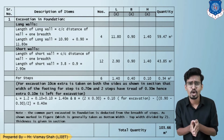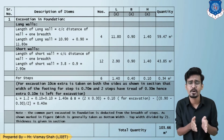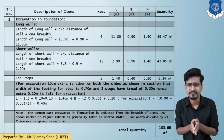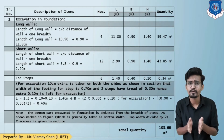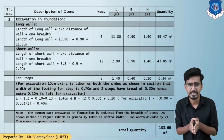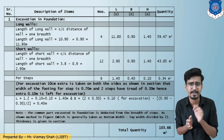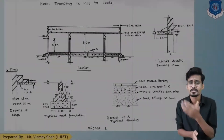For the short walls, the formula is center-to-center distance minus one width: 3.8 minus 0.9 equals 2.9 m. There are 12 short walls; width 0.9 m and height 1.4 m, giving a quantity of 43.8 cubic meters.